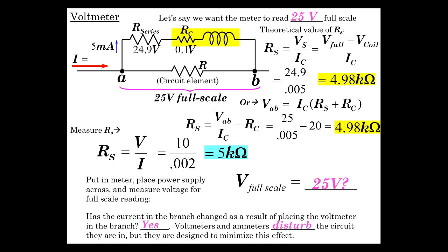Voltmeters and ammeters do disturb the circuit, but the whole point is to minimize that effect. So here we have a high resistance in parallel which doesn't change things very much. The ammeter was a low resistance in series.